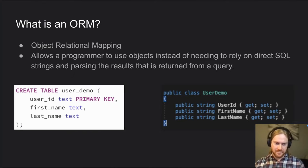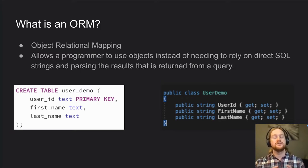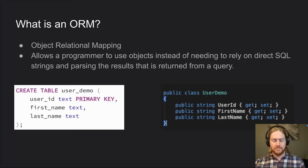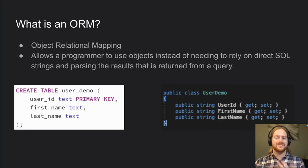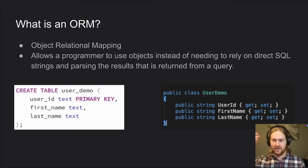Object-relational mapping means we map SQL objects — which are relational, with foreign keys and primary keys — to actual objects in code, so we can more easily read, view, and manipulate them. You can set properties and say 'save changes' instead of needing to think about how to write an update statement in SQL Server or PostgreSQL.